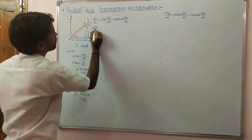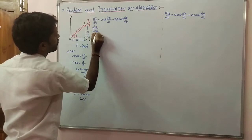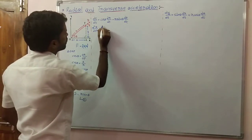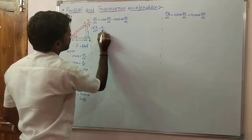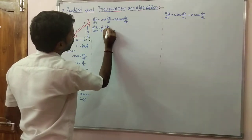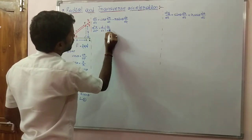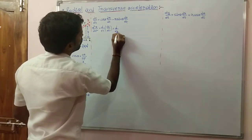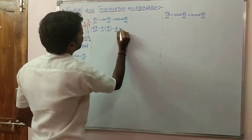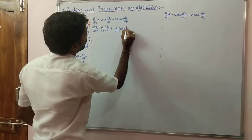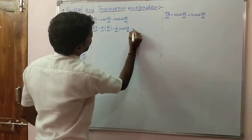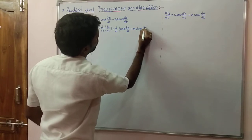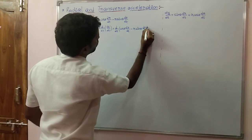d²x/dt² can be written as d/dt of dx/dt. The value of dx/dt is cos theta into dr/dt minus r sin theta into d theta/dt.